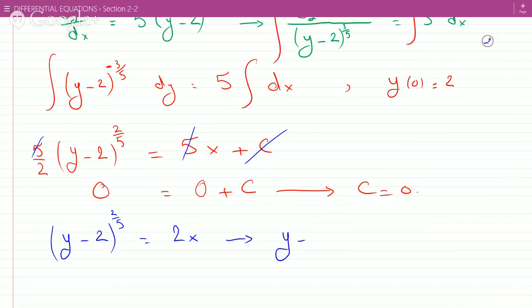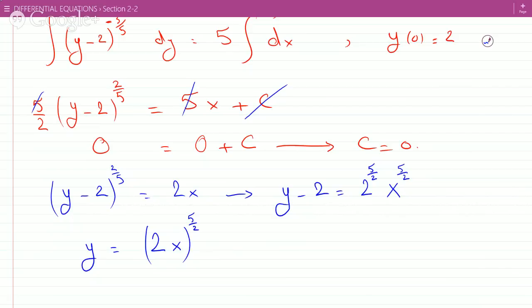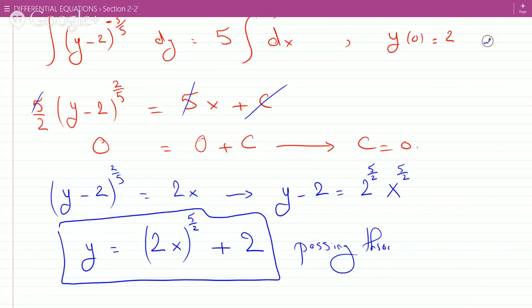Then after the c goes away we can raise both sides to the five halves, so we get y-2 = (2x)^(5/2), which would give us y = (2x)^(5/2) + 2. So this is the solution passing through (0,2) after we plug in the initial conditions.